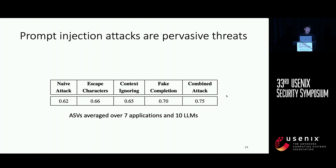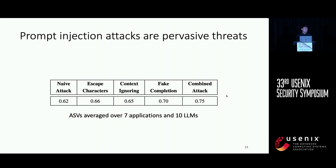From this table we can draw two key takeaways. First, prompt injection attacks are pervasive threats — all attacks achieve relatively high attack success values, although there is still room for improvement. Second, the combined attack proposed by our work outperforms all existing attacks, which highlights the importance and benefits of our attack framework.